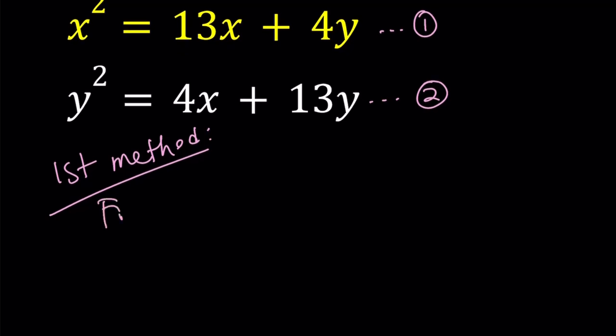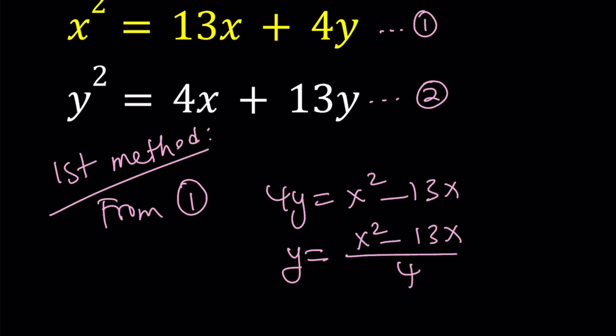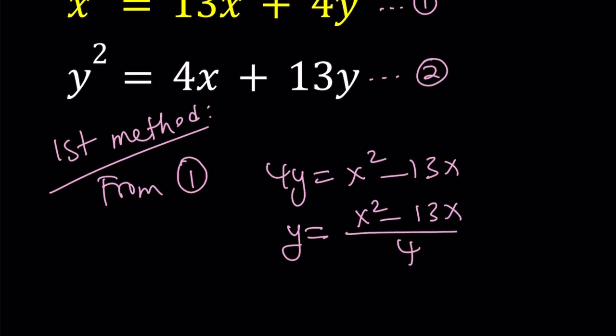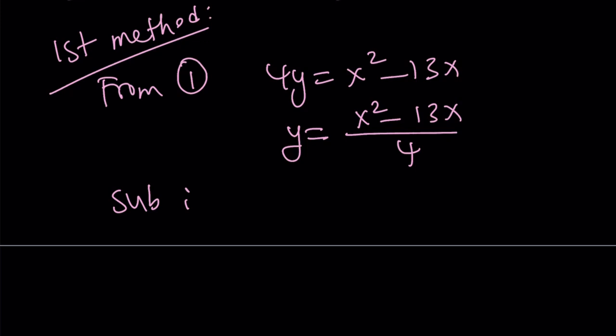From equation number one we get 4y equals x squared minus 13x. And I'm going to divide both sides by 4 to get y in terms of x. So this is something that we're going to be subbing in equation number two, substituting.